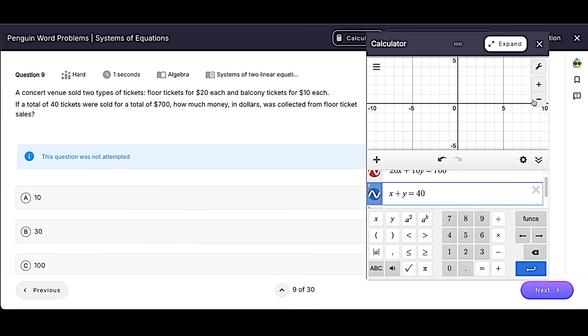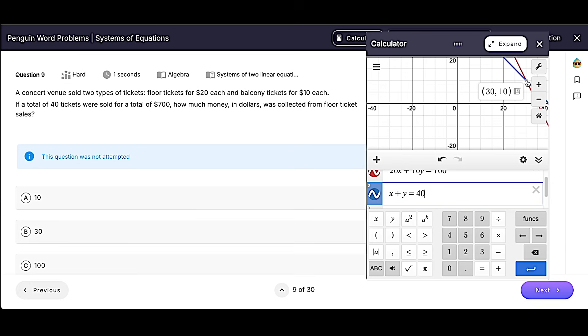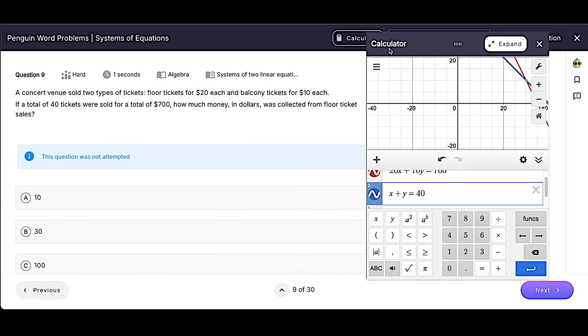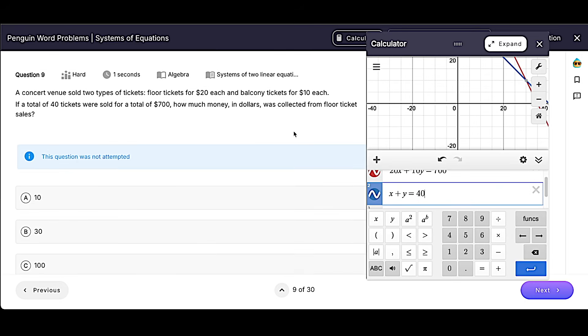Simple enough. Let's find our intersection, which is 30, 10. Now, we see 30 and 10 here. But remember, we want to check. Are we calculating the number of tickets or are we calculating the value, the dollars? And it says how much money in dollars was collected from floor tickets.